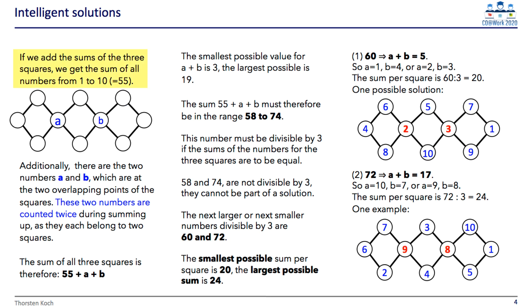First we note that the sum of all numbers 1 to 10 is 55. If we have 3 squares this means we count 2 numbers twice. So we know 3 times the sum of a square equals 55 plus A plus B. Therefore, A plus B has to be at least 3 and can be at most 19. So our solution range is between 58 and 74. We have now lower and upper bounds on our solutions.